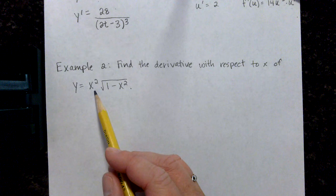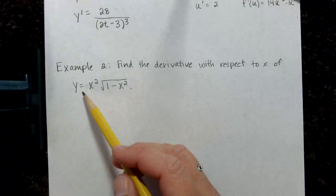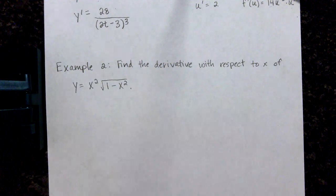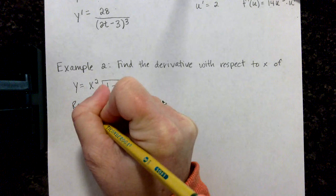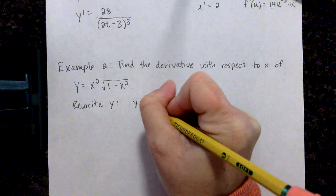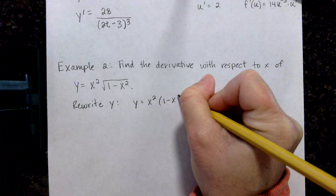I can see here that I have a product. I can't simplify this because of the square root, I can't use the distributive property. So what I'm going to do is I'm going to use the product rule. First I want to rewrite my y. So I have y equals x squared times 1 minus x squared to the 1 half.